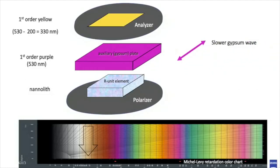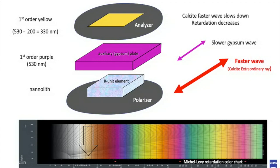In these conditions, the faster calcite ray is slowed down by the slower gypsum ray and retardation diminishes. The new value corresponds to the subtraction of both retardations.